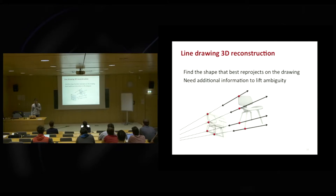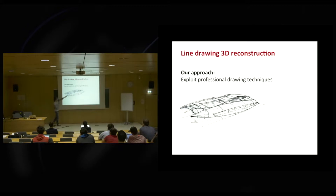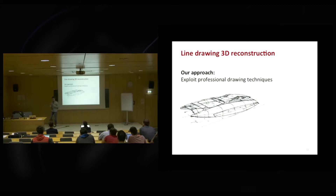The main approach we've followed is to deduce those constraints from how professional designers draw, because they've developed techniques to effectively convey 3D information. They not only draw the shape — they also draw additional lines that help them construct the drawing and communicate it to others. For instance, even though the boat is the main topic, the designer includes lines going toward the main vanishing points, and lines called cross-sections that tell us about the curvature of the shape.